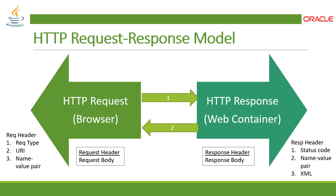The request type indicates the protocol — HTTP, FTP, SMTP — and supports various data types like images and video. The URI identifies your resource. The name-value pair communicates and maps the HTTP request with the HTTP response.